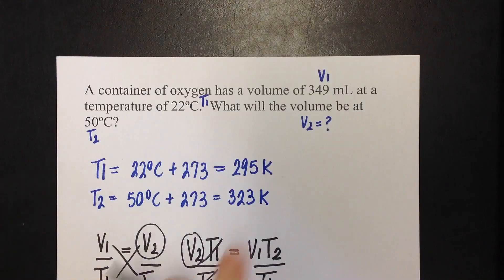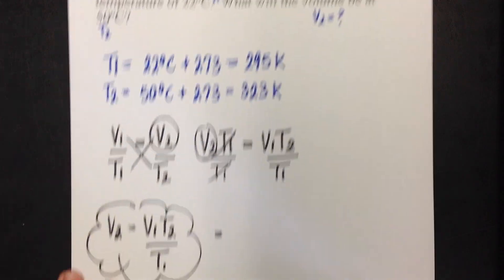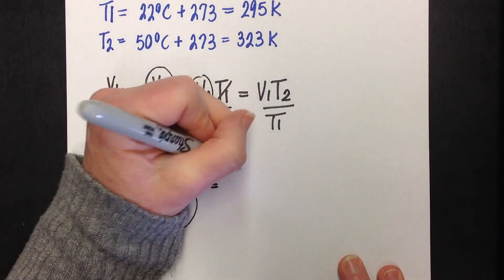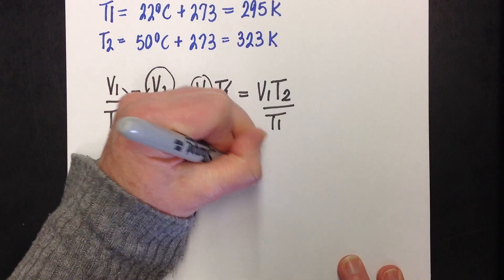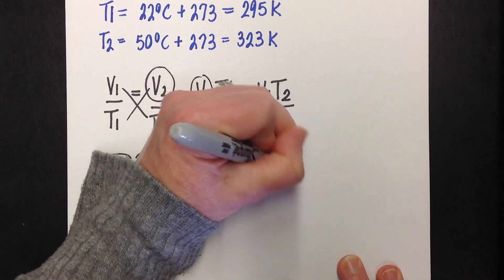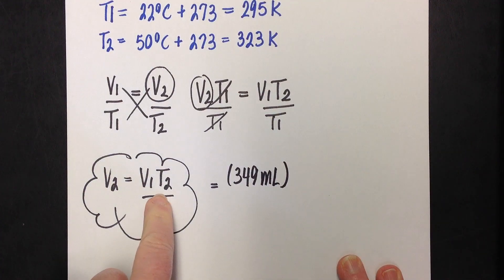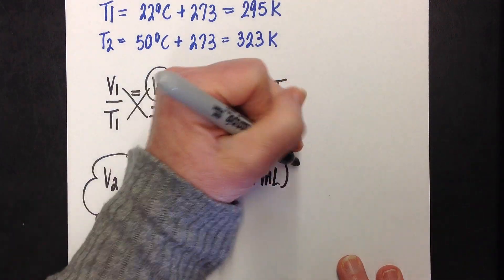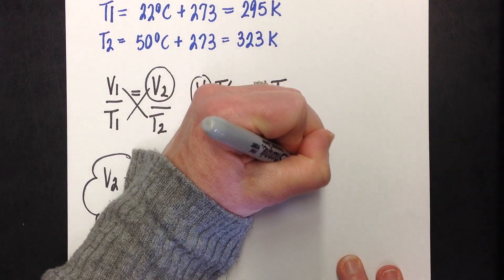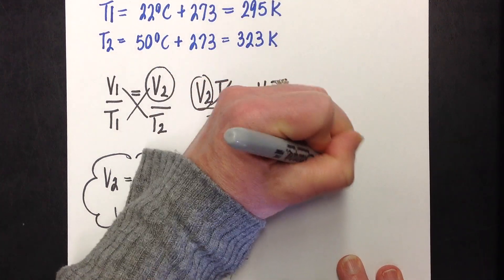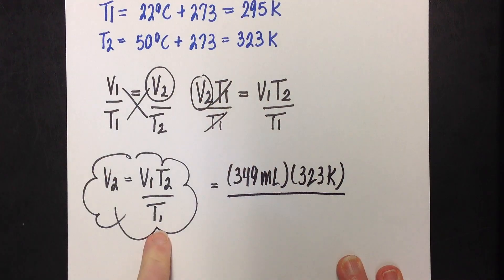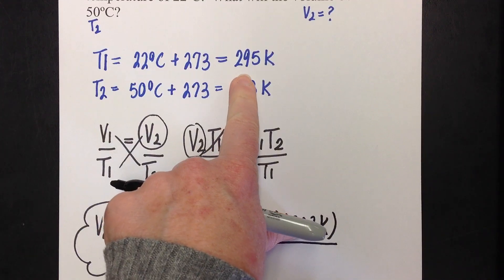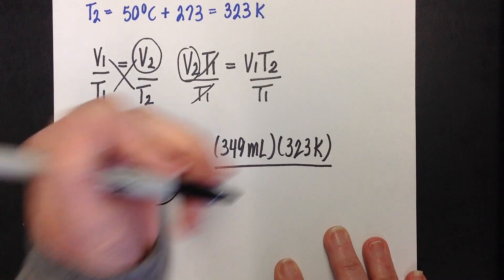So, V1 was 349 milliliters. T2, make sure you pick up the T2, is 323 Kelvin over T1, which is 295 Kelvin.